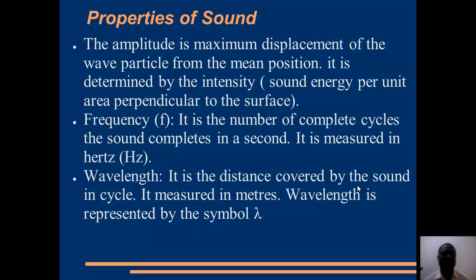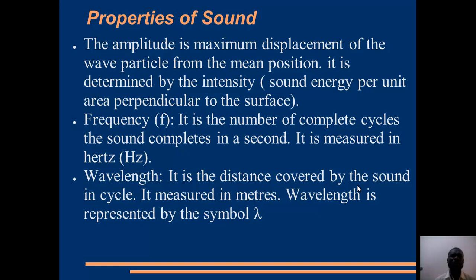Now let's talk briefly about properties of sound. A sound travels in the form of simple harmonic motion — a sine wave variation. It travels up to a peak, down to a threshold, takes the opposite direction, and so on. Although sound is a longitudinal wave, we sketch it in the form of a transverse wave with a sine variation. Because of that it has a maximum peak and a minimum peak. This maximum or minimum displacement of the wave particle is called the amplitude of the sound.